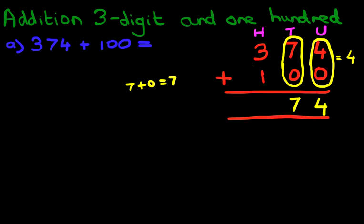And the third one is the hundreds column. We do three plus one. Well, what is three plus one? Well, the answer is four. And we have our answer. Three hundred and seventy-four plus one hundred is four hundred and seventy-four. Now, how easy was that? Let's look at a slightly more tricky example.